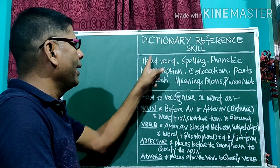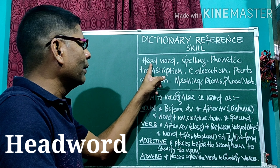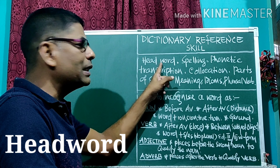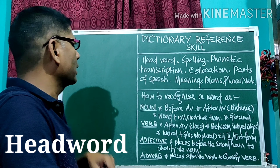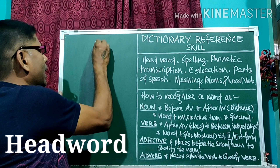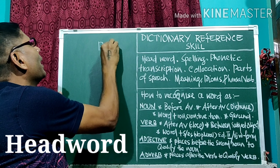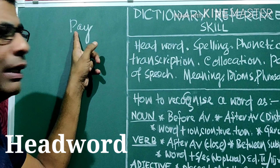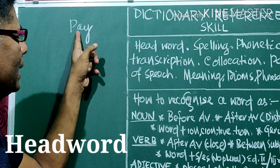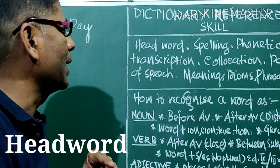First: the head word. In the dictionary, we will get first a head word. For example, we will take the word 'pay' — this is the head word. We can find it in the dictionary.